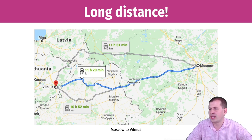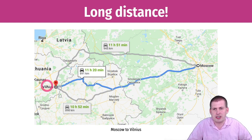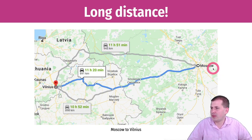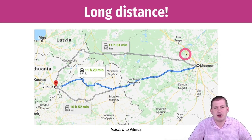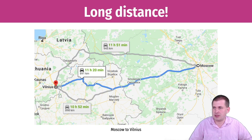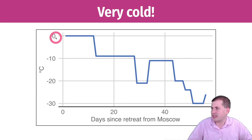One way of looking at this is the distance they had to travel. They were in Moscow and had to travel all the way to Vilnius, Lithuania — where the main French army base was — which is about a thousand kilometers. Had they had a car it would have taken about 12 hours to drive, but it took them several months of marching. Another way of looking at it is the temperatures: it was very cold as they marched away from Moscow.